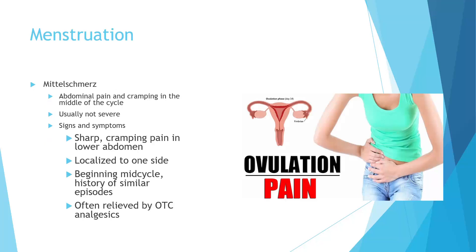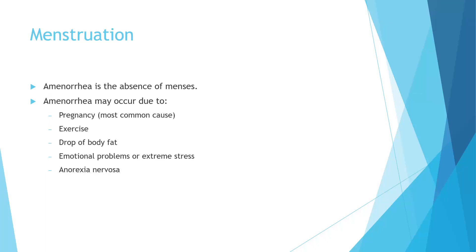Mittelschmerz is the abdominal pain in the middle of the cycle. Usually it's not severe — may be a sharp, crampy pain localized to one side, on the side that's ovulating at that point in time. It may switch side to side depending on which ovary is releasing an egg. This is literally the pain felt when the follicle ruptures and the egg pops out of the ovary. Amenorrhea is the absence of menstruation. This can occur with pregnancy of course — most common — significant exercise, a drop of body fat below a certain percentage, extreme stress, and anorexia nervosa — all of these things can lead to malnutrition and cause changes in the menstrual cycle.